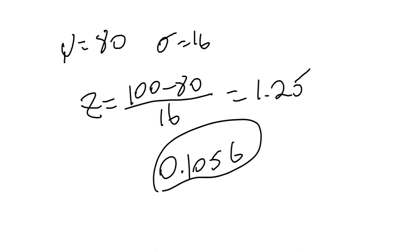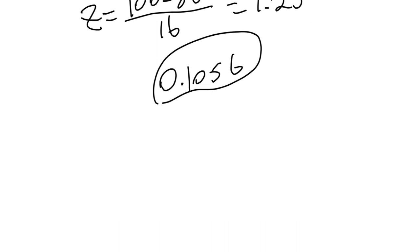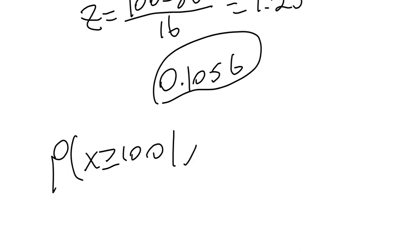For the conditional probability that it lasts at least another 12 hours, given that it's already lasted 88 hours — we want the probability that x is greater than or equal to 100, given that x is greater than or equal to 88. We know that the probability that x is greater than or equal to 100 is about 0.1056 from the first part.